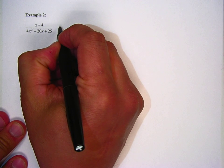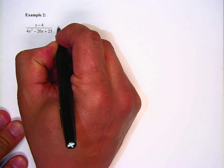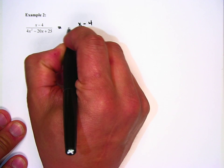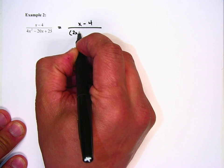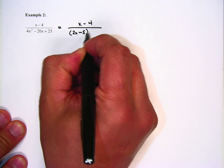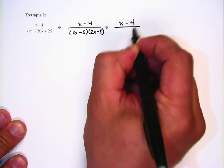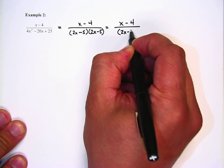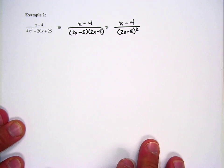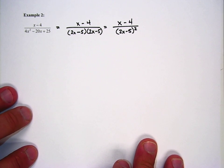Here's our second example for the second case, which is repeated linear factors. Looking at this problem, we don't know it's repeated linear factors until we factor the denominator. That's the key — making sure that you factor the denominator. So we're going to take 4x squared minus 20x plus 25, which factors into 2x minus 5 and 2x minus 5, or x minus 4 over 2x minus 5 squared. There are our repeated linear factors.